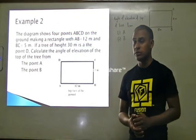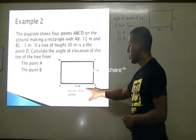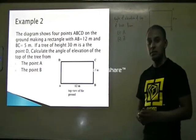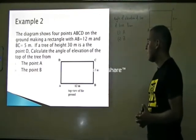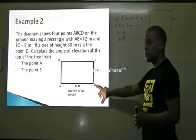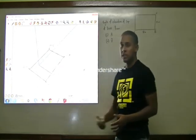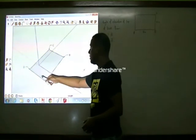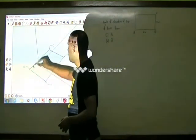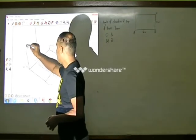Let us have a look at example two. In this example, we have four points on the ground making a rectangle ABCD, with AB 2m and BC 5m. There is a tree at point D of height 30m. The question asks us to calculate the angle of elevation of the top of the tree from point A (part one) and from point B (part two). Let us have a look at the four points on the ground level in Google SketchUp — these are points A, B, C, and D making a rectangle, with a tree drawn at point D.